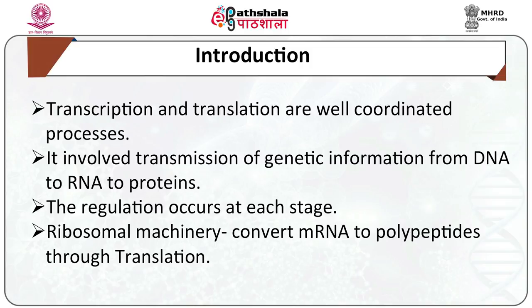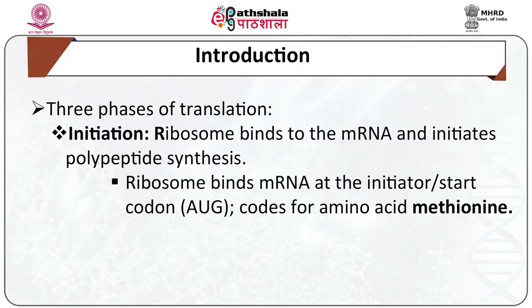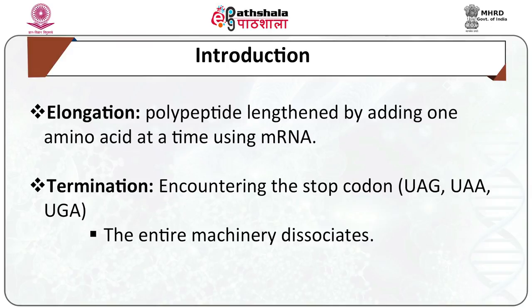Translation consists of three phases: initiation, elongation, and termination. Initiation is the process in which the ribosome binds to the mRNA and initiates polypeptide synthesis, occurring at the initiator or start codon AUG, which codes for the amino acid methionine. Elongation is when the polypeptide is lengthened by adding one amino acid at a time using mRNA as a template and tRNA bringing the next amino acid as coded by the template. Termination occurs when synthesis of polypeptide is stopped on encountering stop codons such as UAG, UAA, or UGA, and the entire machinery dissociates.